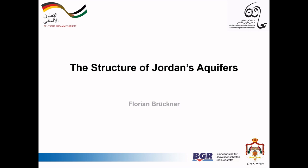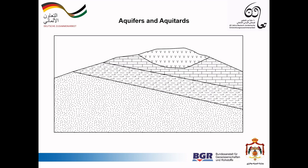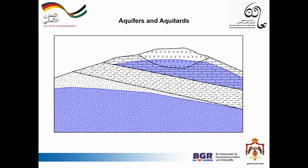Hello and welcome to this video presentation about the structure of Jordan's aquifers. Groundwater flows through certain geological layers called aquifers, whereas in other layers there is almost no flow. These layers are called aquitards and they often separate different aquifers from one another.